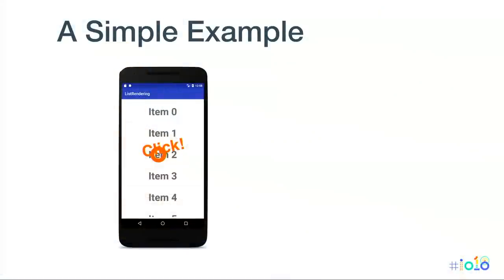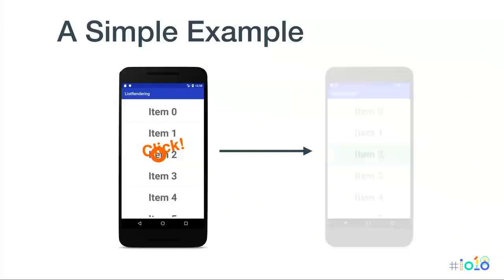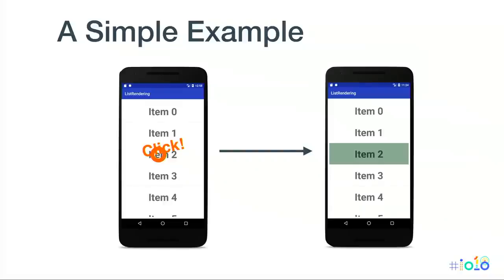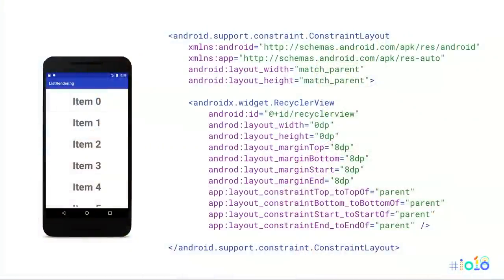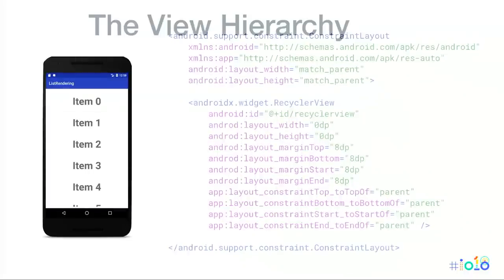Here's a simple example. Suppose the user clicks on an item. I wrote a RecyclerView application — it's a RecyclerView with a bunch of items, and when the user clicks on one, it turns into a random color on the background. Here's the layout: there's a ConstraintLayout with a RecyclerView inside it, populated at runtime with a bunch of random items.